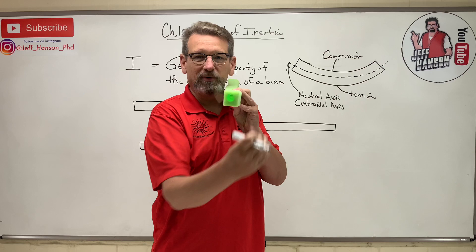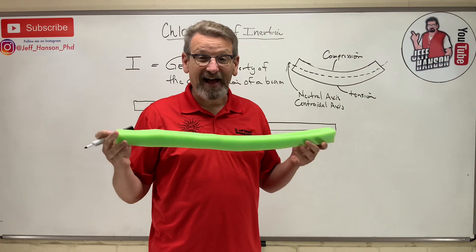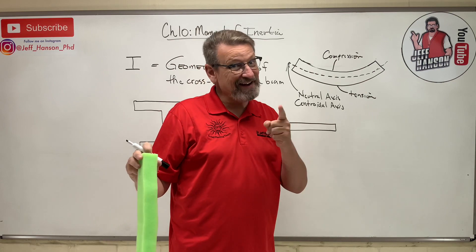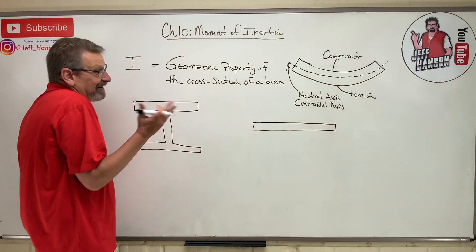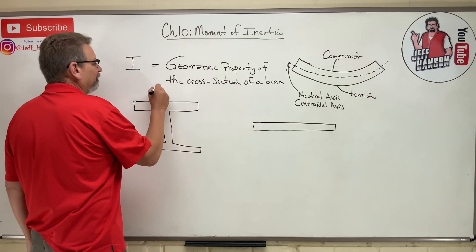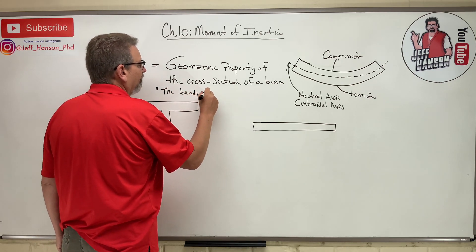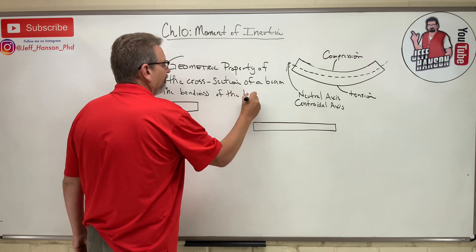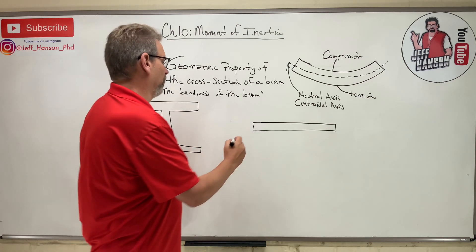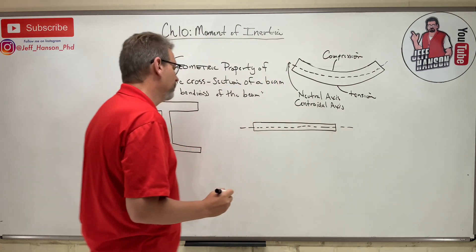The neutral axis is always at the centroid of the cross section of the shape. This is a symmetric shape so the centroid is right in the middle, which is where the neutral axis occurs. For these beams, to calculate I we're going to have to find the centroid, but we know how to do that because we've been practicing it. I like to think of the moment of inertia as the bendiness of the beam — or how prone a beam is to bending.